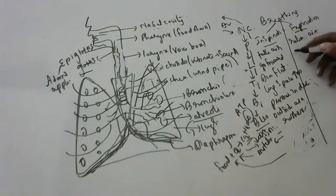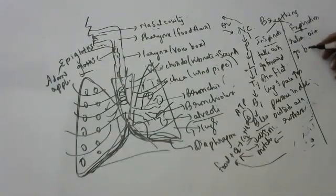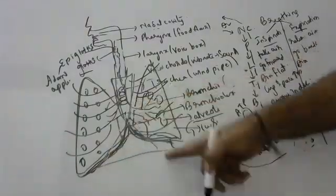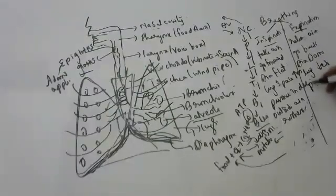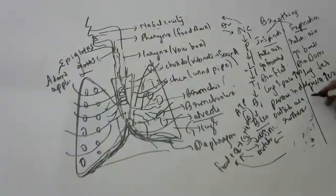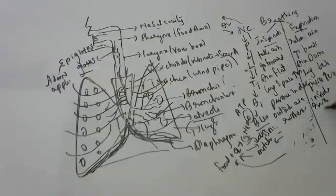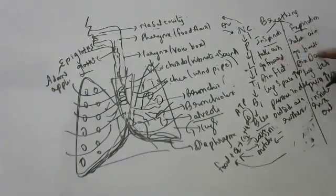During expiration, the ribs go back. The diaphragm becomes dome-shaped again. The lung space decreases and pressure inside increases. So the inside air rushes out. Inspiration plus expiration together is breathing.